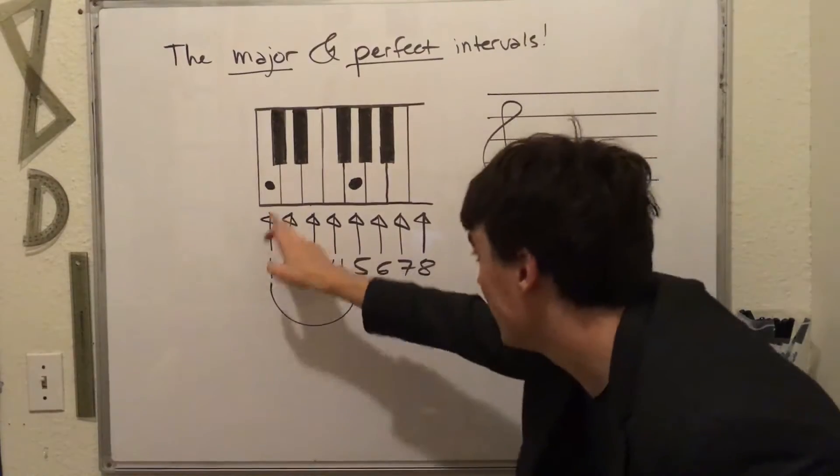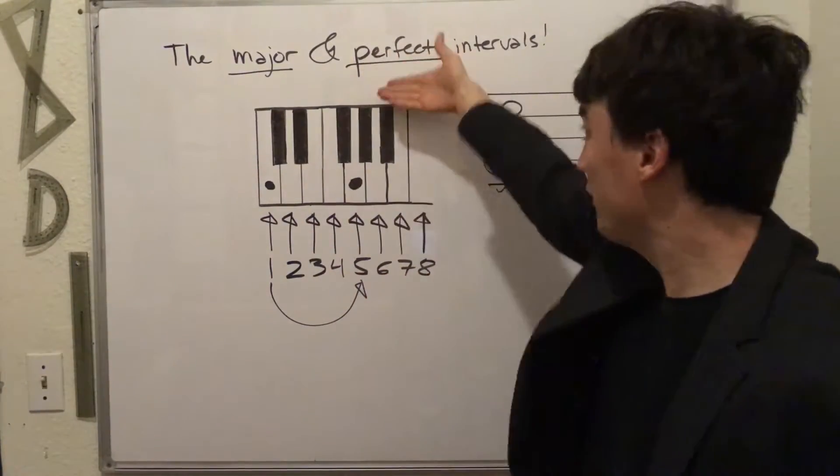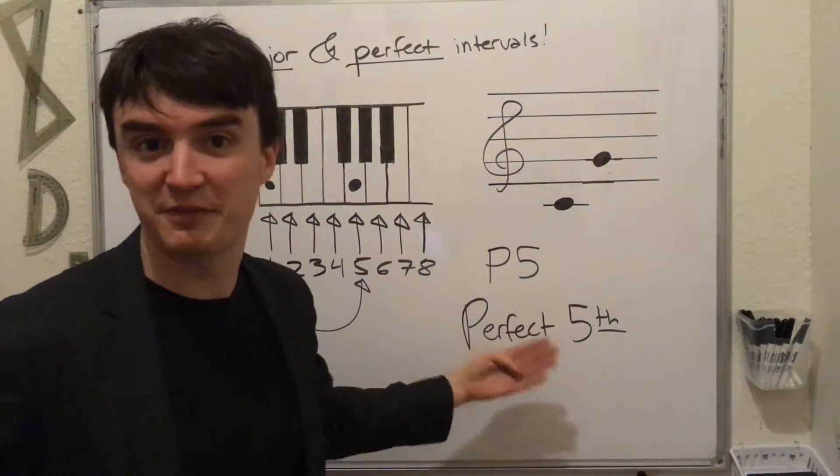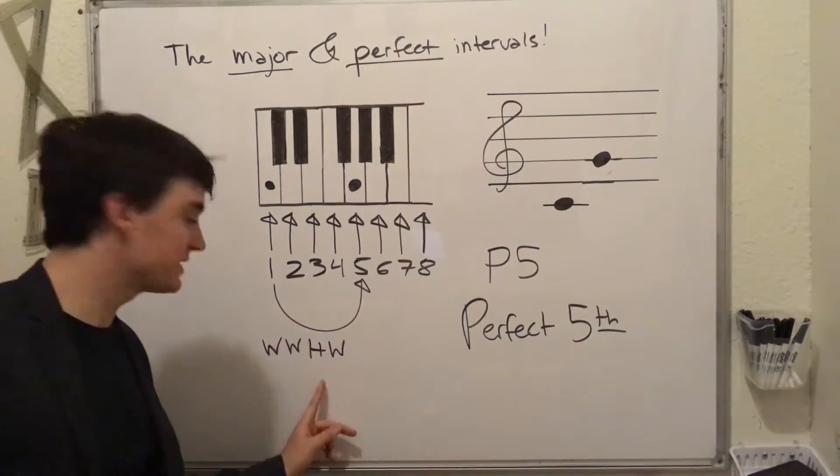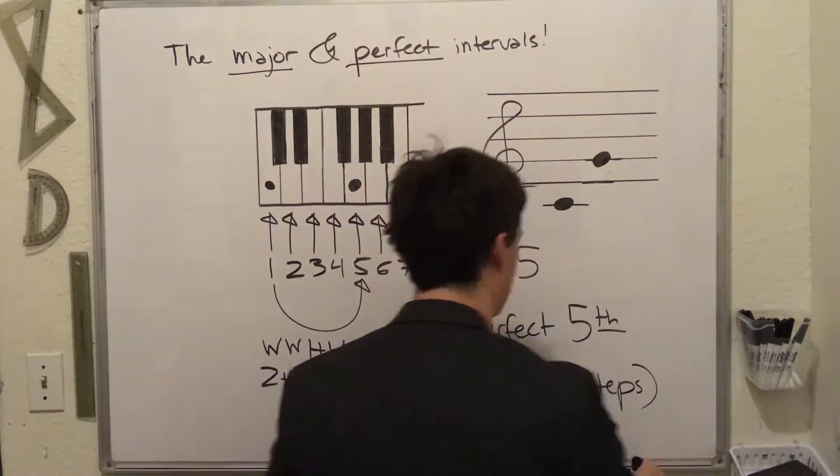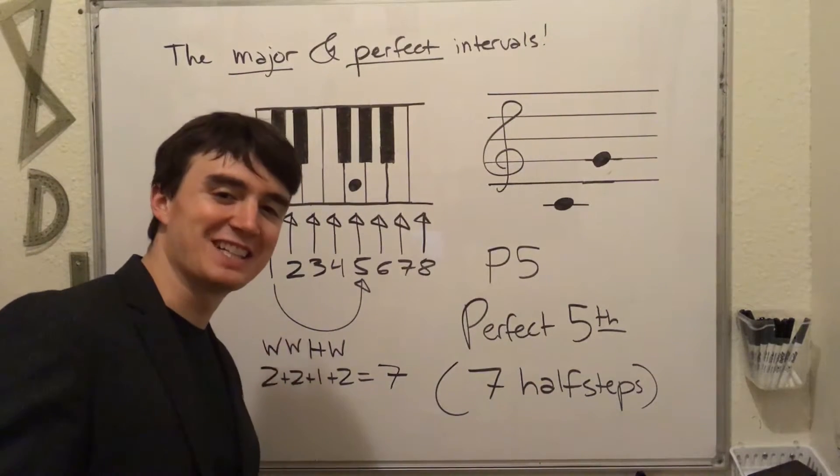Let's say you start on 1 and go to 5. That's another perfect interval. It's a perfect fifth. To get there, you need a whole step, a whole step, a half step, and a whole step. Seven half steps from the tonic.